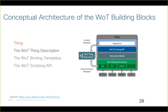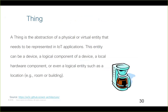The conceptual architecture has four important building blocks. We want to glue different platforms and standards, so we build four blocks for that. The four are: the thing, the thing description, the binding template, and the scripting API. The 'thing' is an abstraction — it can be an abstraction of a device or a virtual entity you need to represent in an IoT application. Whatever you need to manipulate through the web, you can build it as a thing: a device, a logical component of a device, local hardware components, or just a resource like a location.